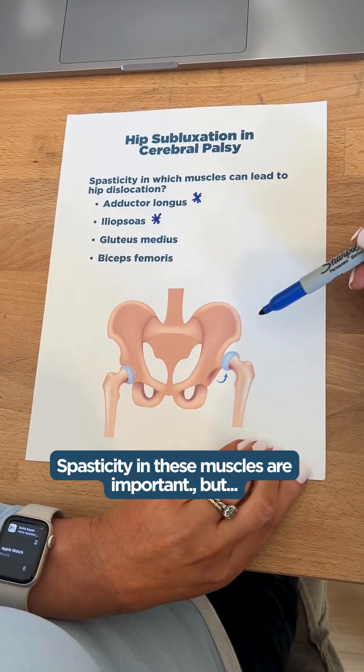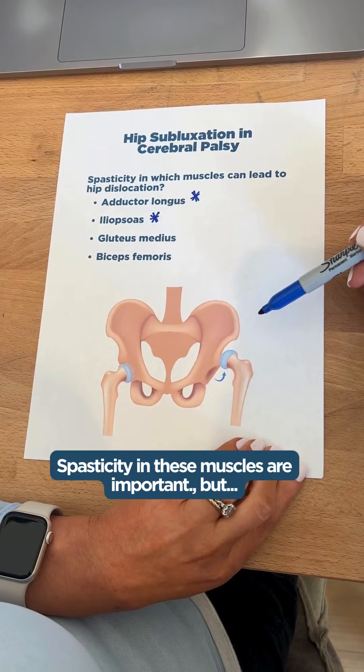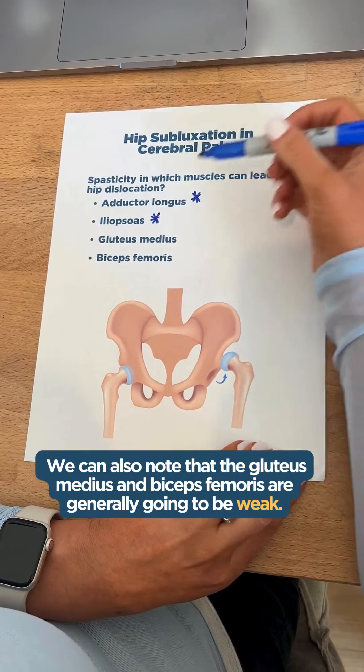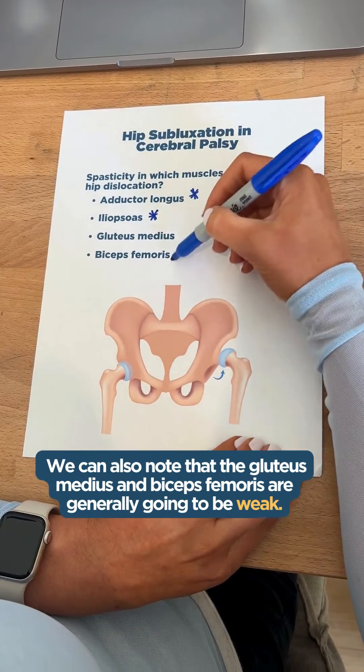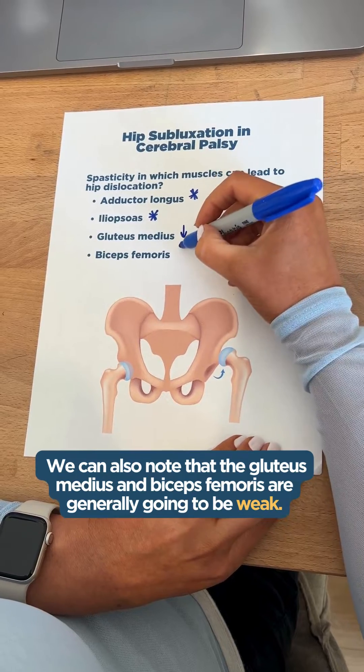Spasticity in these muscles is important, but we can also note that the other two muscles — glute med and bicep femoris — are generally going to be weak.